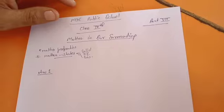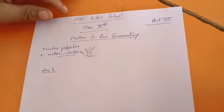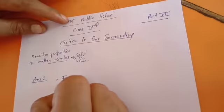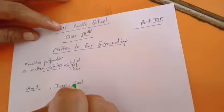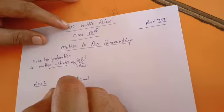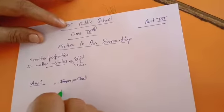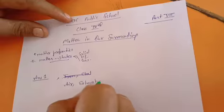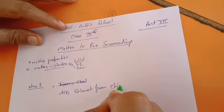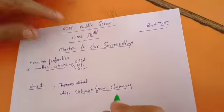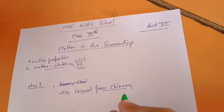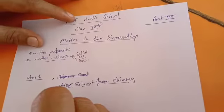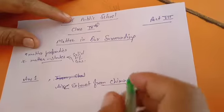The first question asks you to arrange the given substances according to their density in increasing order. First will come air, then exhaust from chimneys — because that contains smoke, its mass is increased, so its density will be greater than air.